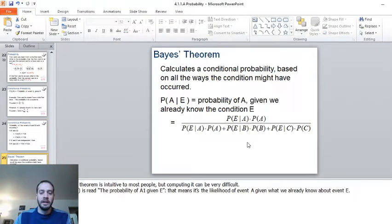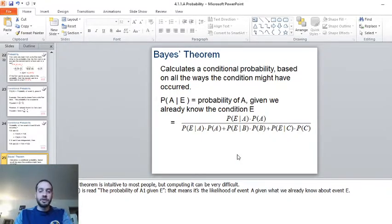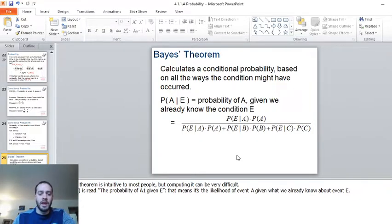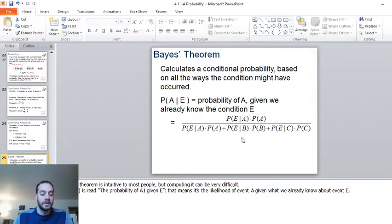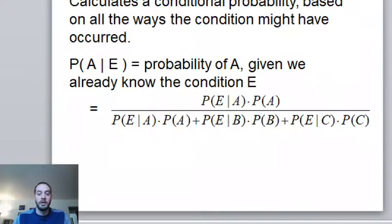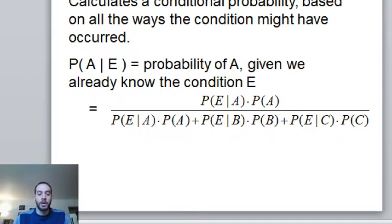This is called Bayes' Theorem. Write the definition: Bayes' Theorem calculates conditional probability based on all the ways the condition might have occurred. Write that down, and also write down this equation. Zoom in so you can see it nicely — write that down as well, and be really careful how you write it.